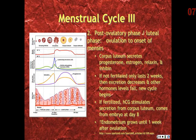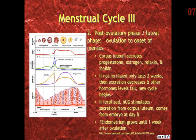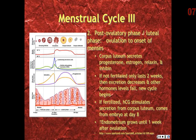If fertilization does occur, HCG, or human chorionic gonadotropin, stimulates the secretion of hormones from the corpus luteum. This begins to come from the embryo at day eight and is what is measured in a pregnancy test. A positive pregnancy test is generally very reliable, but a negative test is not as reliable, since the test may have occurred prior to day eight. The endometrium will grow until one week after ovulation. There is no research showing that HCG provides weight loss in any way.